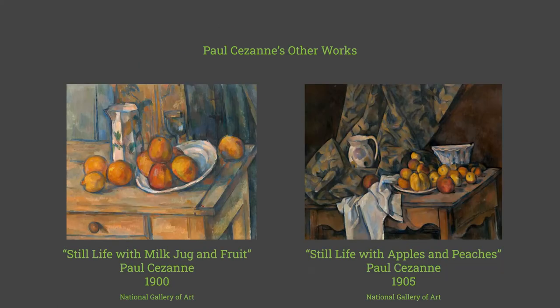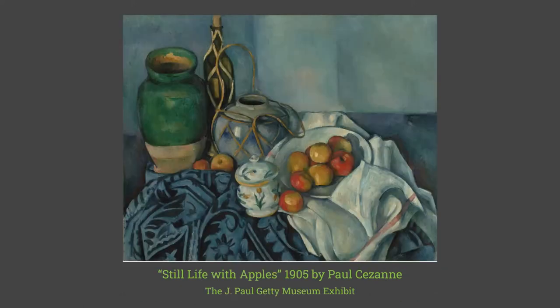Next, let's talk about Paul Cézanne's background. He was a well-known French post-impressionist artist who focused on the study of human visual perception and cubism in his later years. He was riddled with depression due to the loss of his mother in 1897, but his illness did not stop him from making some of the best art pieces of his life, including still lifes such as 'Milk Jug and Fruit,' 'Still Life with Apples and Peaches,' and the painting we're discussing today, 'Still Life with Apples.'